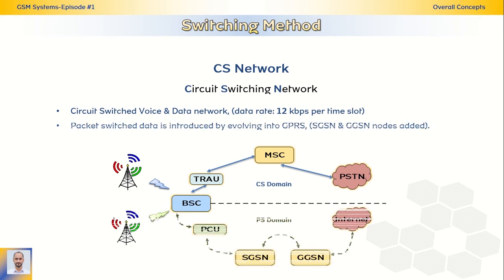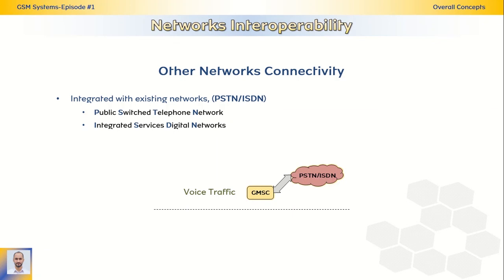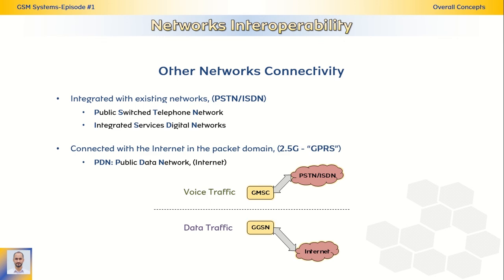Later on, packet switching was introduced by evolving into GPRS and adding two main nodes — SGSN and GGSN — to the architecture of the GSM system. GSM supports interoperability with other networks: the Public Switched Telephone Network and Integrated Services Digital Networks of the fixed lines. The main element responsible for adapting signals between these two networks is the GMSC. The system also supports connectivity with the internet and public data networks through GGSN, introduced in the 2.5G or GPRS generation.